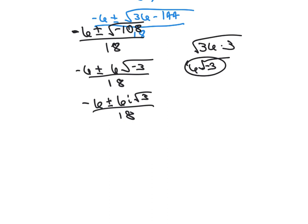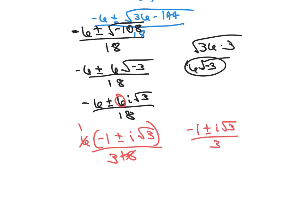And now I'm going to factor out 6. So let's take out a 6. I'm left with negative 1 plus or minus that 6 goes away. Six over 18 is one third. So now I have negative 1 plus or minus I square root of 3 over 3 over 3 for an answer. So I have negative 1 plus I square root of 3 over 3.